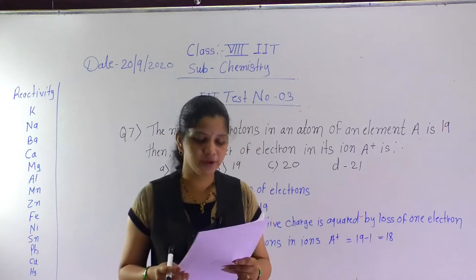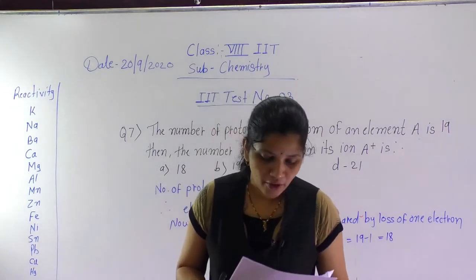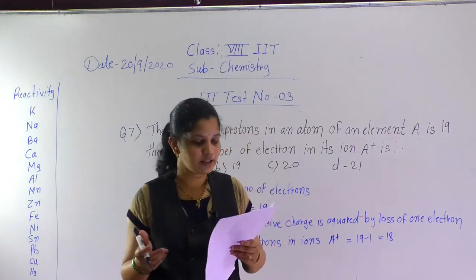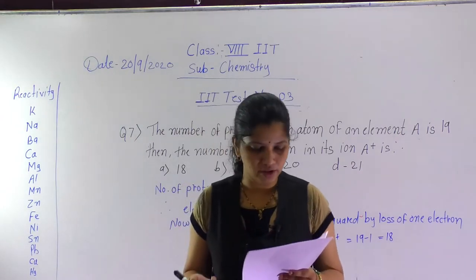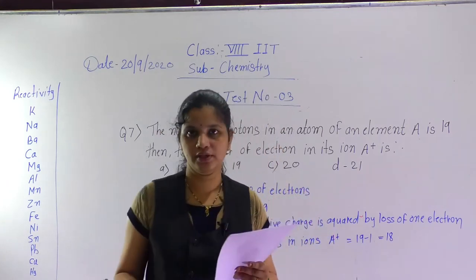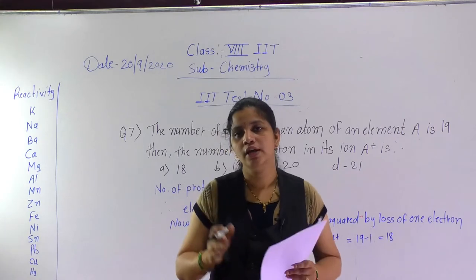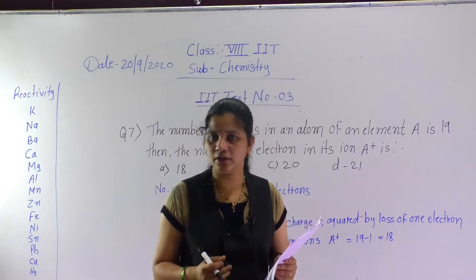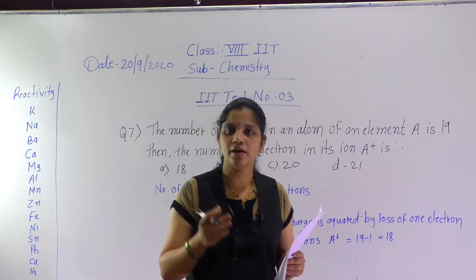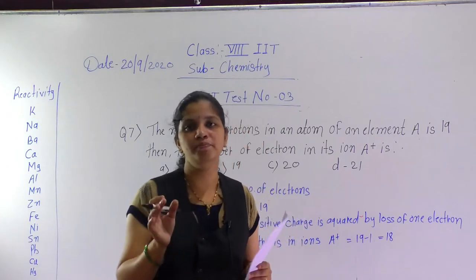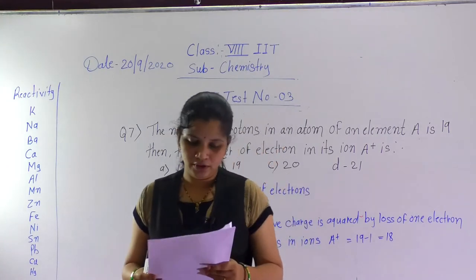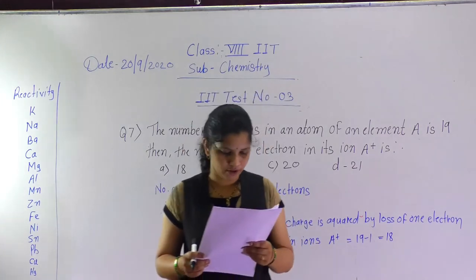Question number 3: rusting of iron takes place in — ordinary water, distilled water, both ordinary and distilled water, or none of the above. Rusting of iron means when iron comes into contact with oxygen and water, it starts rusting. After some time rust forms on the metal. So it takes place in both ordinary and distilled water.